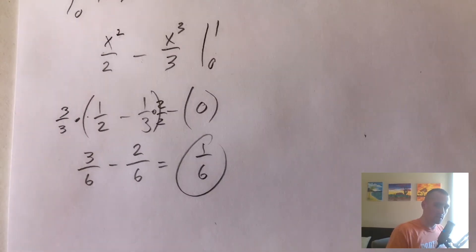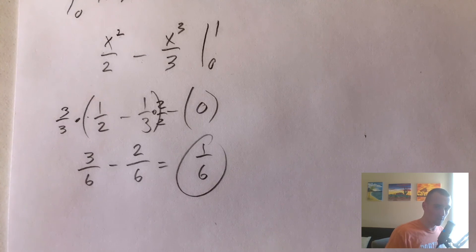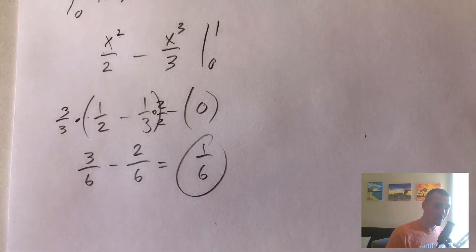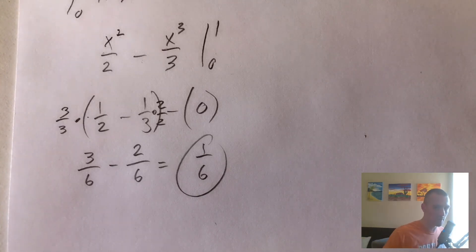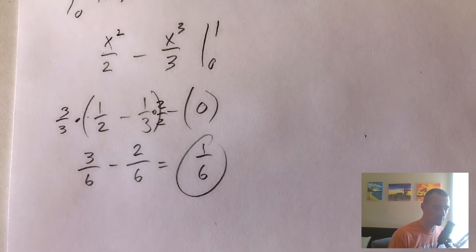So the area between y equals x and y equals x squared is one sixth. As I mentioned, this method and formula is on my Calc 2 study guide, which should make studying and homework a lot easier. There's a link in the description to download it right now — hopefully you found this helpful, thanks and see you next time.